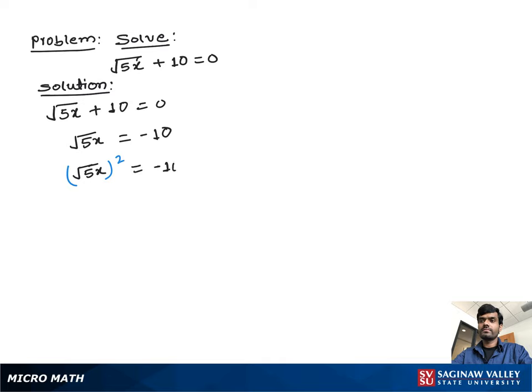So we can get 5x equals negative 10 times negative 10, which is positive 100. Now we divide both sides by 5.